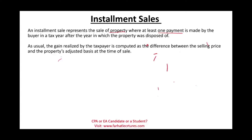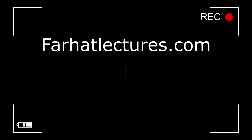The realized gain would have to be computed, and it's the same as the regular realized gain: the selling price minus the adjusted basis. That does not change, whether it's an installment sale or a regular sale.